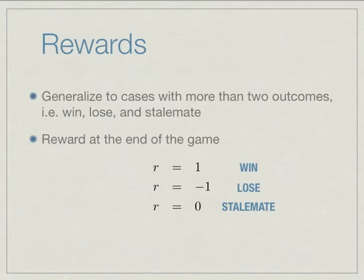So in this case, we need to generalize to cases with more than two outcomes. So we have win, lose, and stalemate. So we have some kind of reward at the end of the game. We have a reward of one if we win, negative one if we lose, zero if we stalemate.